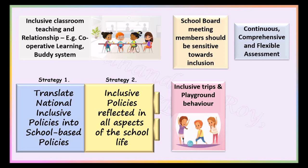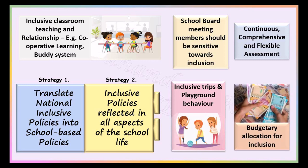Opportunities to all students must be given to participate in different sports competitions. Students should not be restricted from participating in co-curricular and extracurricular activities due to their disabilities or challenges. While deciding the budgetary allocations, finances should be given to cater to the needs of the differently abled. For example, the school may require talking calculators for their visually challenged students. Infrastructural facilities along with their maintenance should be provided in the broad budget.